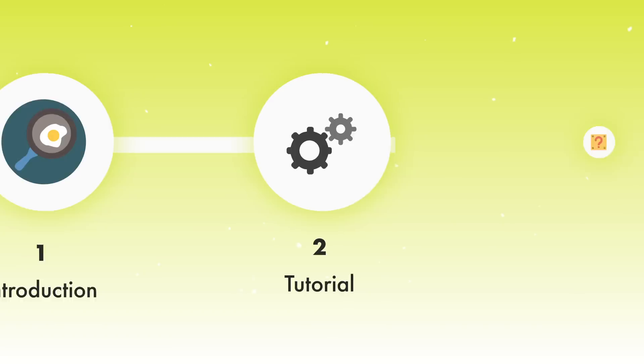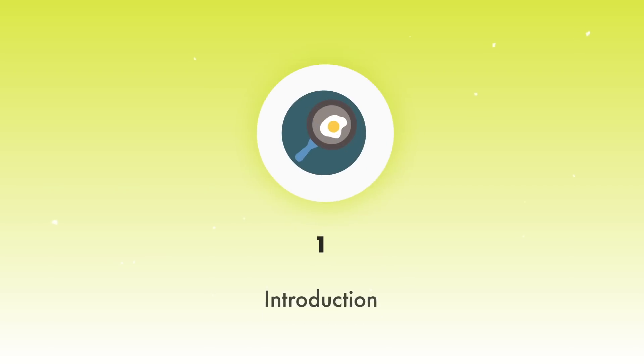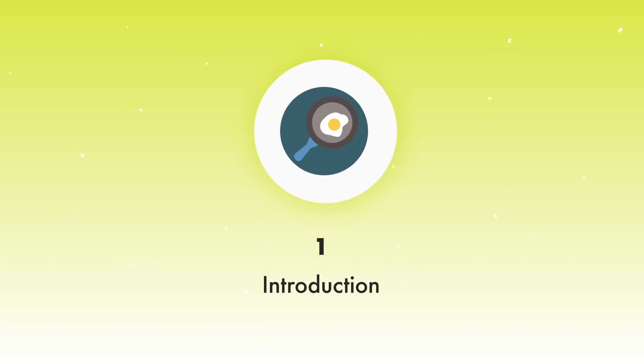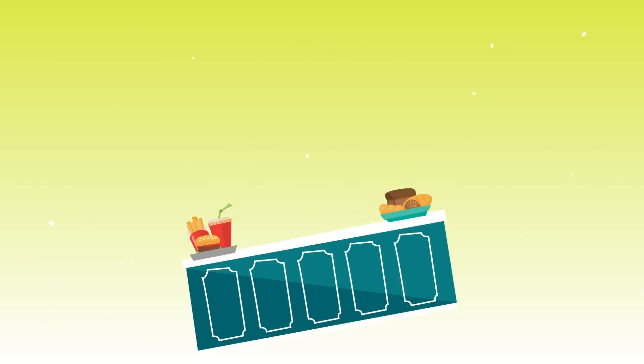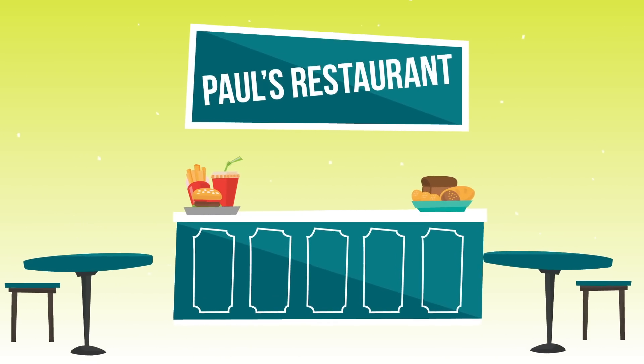Make sure you stick around to the end because there's going to be a bonus tip regarding exclusion targeting for specific geographic areas that not many advertisers know about. So for today's example, we're going to be using a fictional restaurant called Paul's Restaurant.